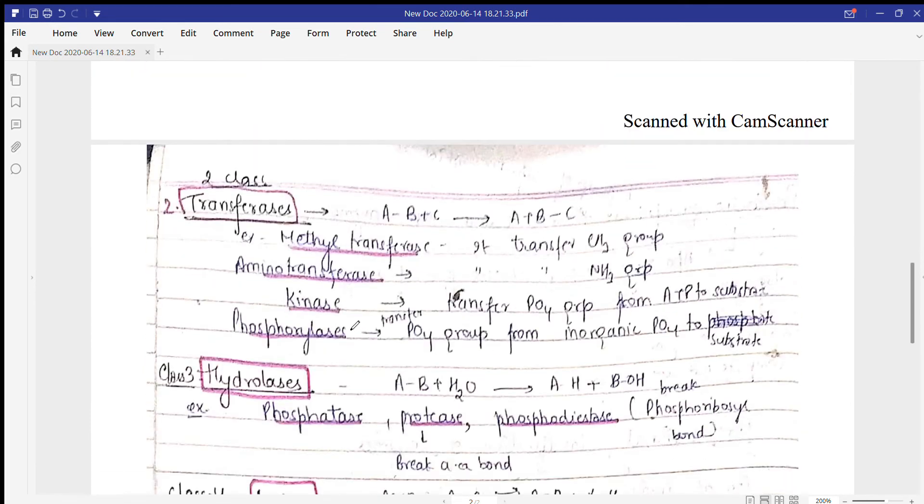Second class is transferases. You can easily understand transferases because they transfer one group from substrate to product. Examples include methyl transferases, which transfer methyl groups; amino transferases, which transfer amino groups; and kinases, which transfer the phosphate group from ATP to the substrate.